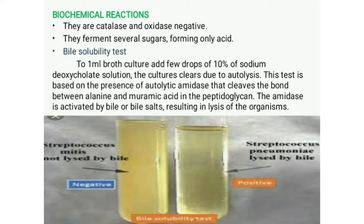The bile solubility test is positive for Streptococcus pneumoniae. A few drops of 10% sodium deoxycholate solution are added to 1 ml of overnight growth culture, and the culture clears due to lysis of the cocci. This autolysis is due to the autolytic amidase enzyme that cleaves the bond between alanine and muramic acid in the peptidoglycan, becoming active only in the presence of bile or bile salts like sodium deoxycholate.